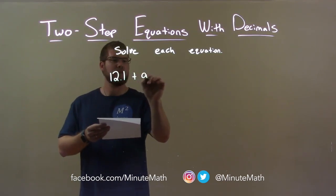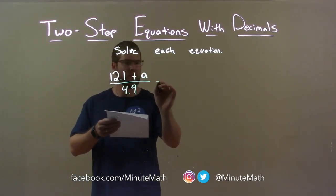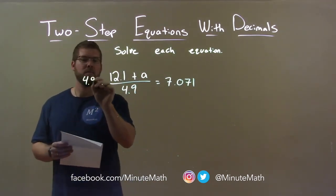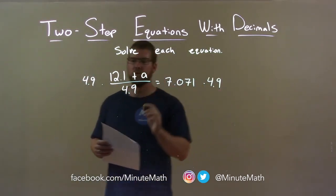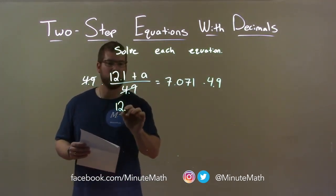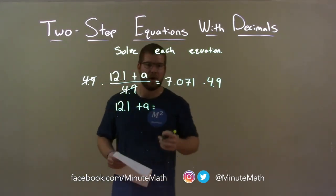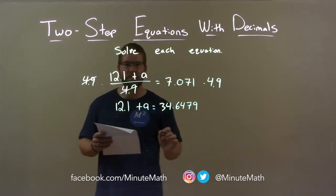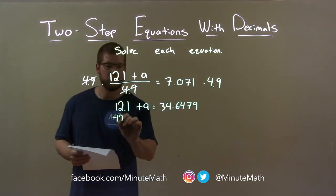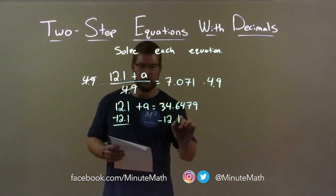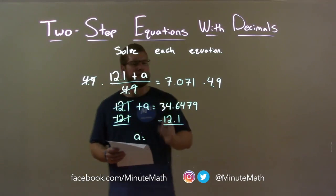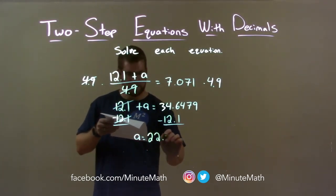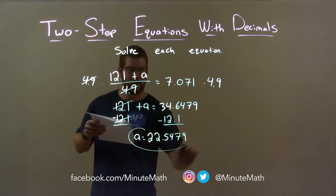12.1 plus a over 4.9 equals 7.071. First thing I want to do is multiply 4.9 to both sides. In doing so, I eliminate the 4.9 on the left, giving me 12.1 plus a on the left, one step closer to getting a by itself. Now, 7.071 times 4.9 is 34.6479. I'm adding 12.1, so if I subtract 12.1 from both sides, I'll eliminate that and get a by itself. 34.6479 minus 12.1 is 22.5479. And there we have our final answer.